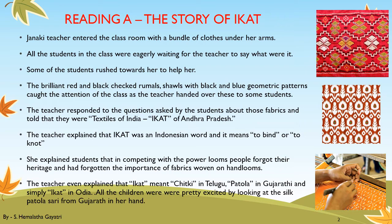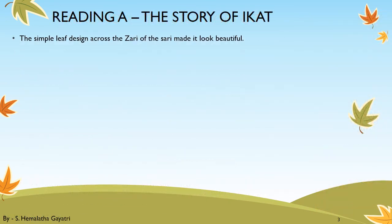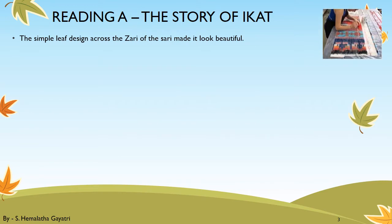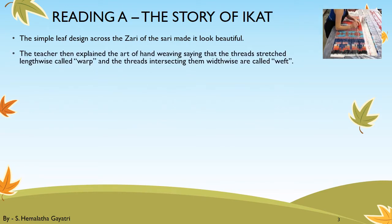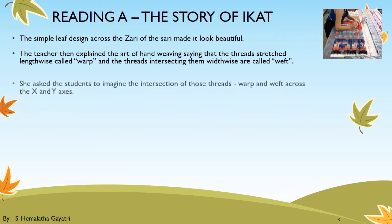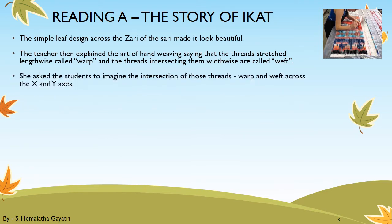All the children were pretty excited looking at the silk Patola saree from Gujarat in the teacher's hand. The simple leaf design across the zari of the saree made it look more beautiful. The teacher then explained the art of hand weaving, saying that the threads stretched lengthwise are called warp and the threads intersecting them widthwise are called weft. She asked the students to imagine the intersection of those threads — warp and weft — across the x and y axis.